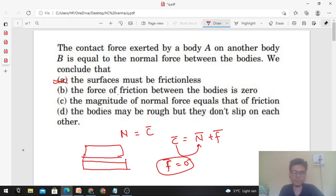For option B, the force of friction between the two bodies is zero. Of course, if contact force is equal to normal, then force of friction will be zero. So option B will be correct. For option C, the magnitude of normal force equals that of friction.